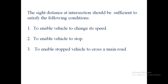The first condition is to enable a vehicle to change its speed. The sight distance should be sufficient to enable either one or both approaching vehicles to change speed to avoid collision. When we are reaching at the junction point, we need to maintain sufficient sight distance for both vehicles. At the junction zone there is very heavy traffic, and some drivers do not maintain rules and regulations, so we need to maintain sufficient sight distances.